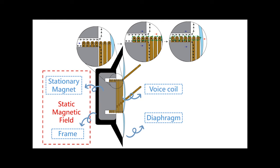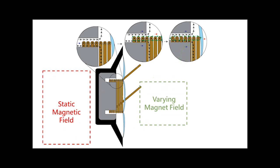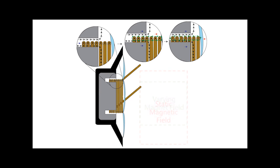When the varying current of an audio signal is passed through the coil, it creates a varying magnetic field which reacts against the static magnetic field, exerting a varying force on the coil, causing it and the attached diaphragm to vibrate back and forth.